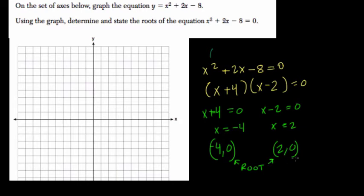So we plot these. We get negative 1, 2, 3, and 4. This is one of our roots. Negative 4, 0. That's a root. And the other root is 2, 0.